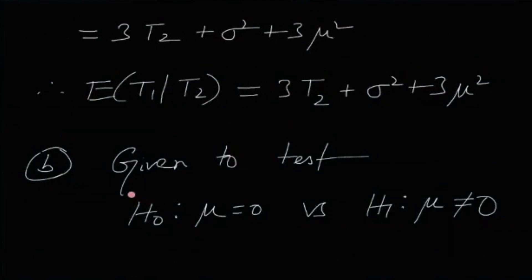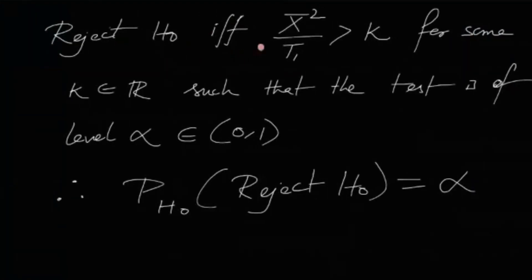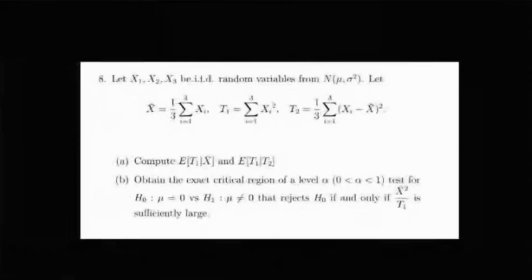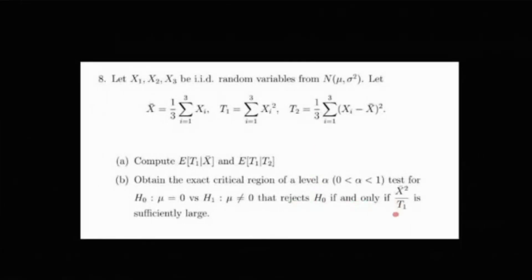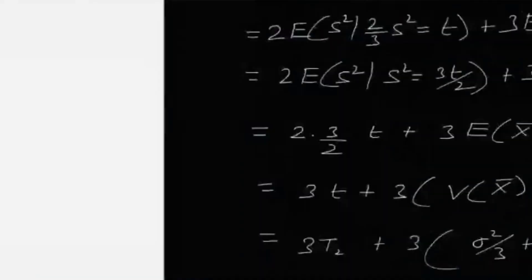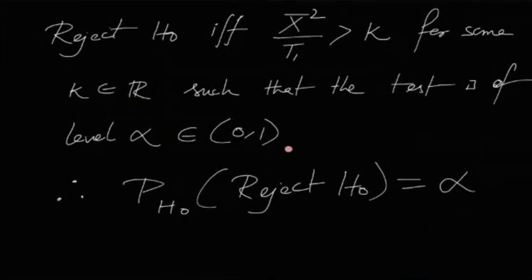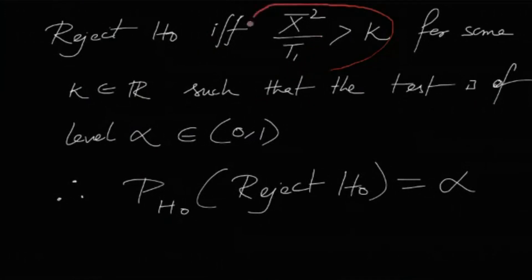For part two, we test H0: μ=0 versus H1: μ≠0. The test rejects H0 if and only if x̄²/t1 > K, where K is chosen so the test has level α. So P_{H0}(x̄²/t1 > K) = α, and we need to find K.